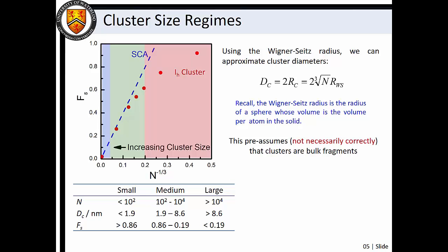For example, using the Wigner-Seitz radii for the most common metals, we calculate that small clusters have diameters that are less than 2 nanometers, medium-sized clusters have diameters between 2 and 9 nanometers, and large clusters have diameters larger than about 9 nanometers.